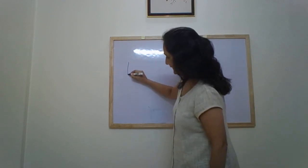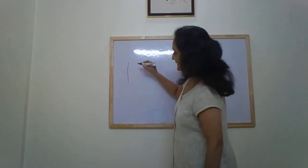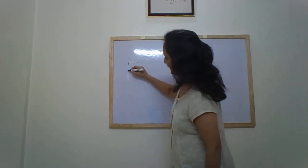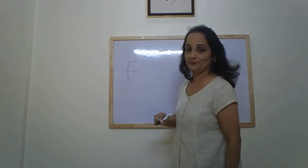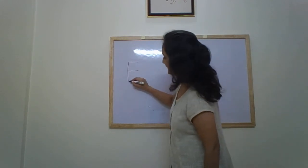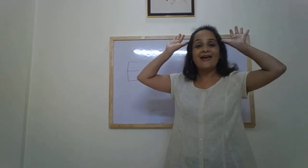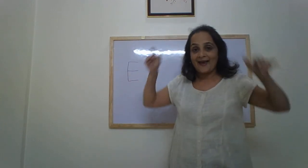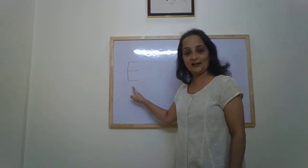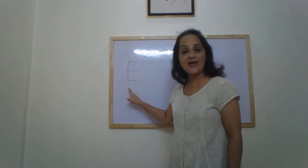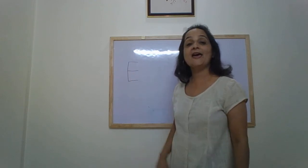Standing line, sleeping line on top, sleeping line in the middle, sleeping line down — is letter E. E makes the sound E. E for elephant, egg, engine, elbow, escalator, and envelope.